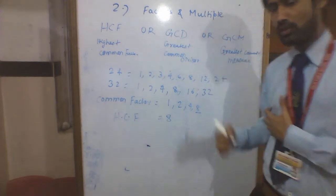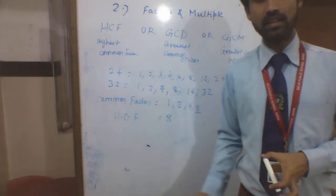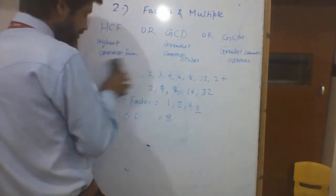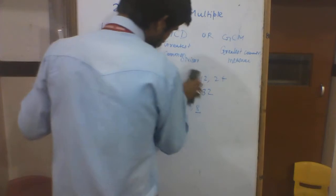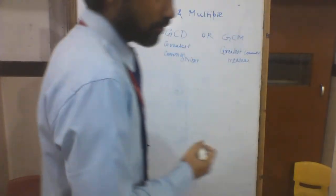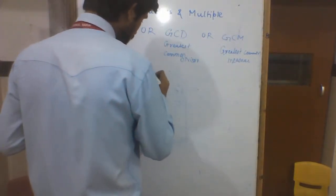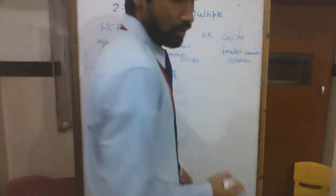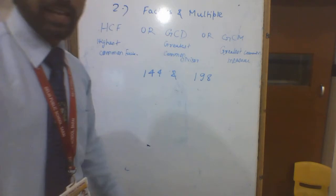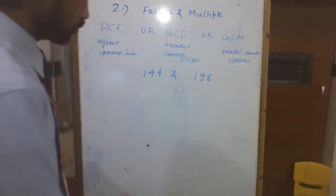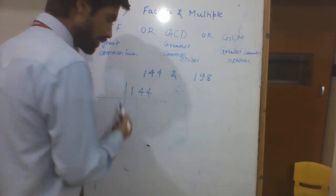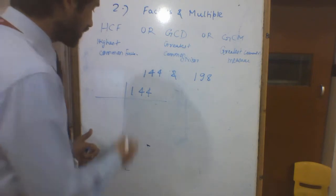This was the basic method, but now we will find the highest common factor between 144 and 198. We will find the highest common factor using the prime factorization method. In the prime factorization method, we divide by prime numbers.